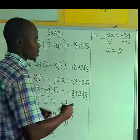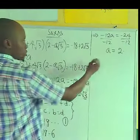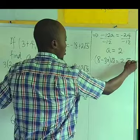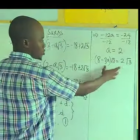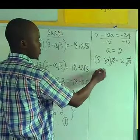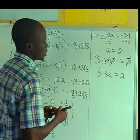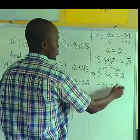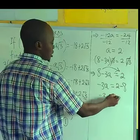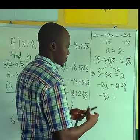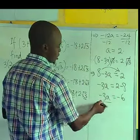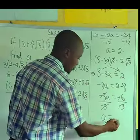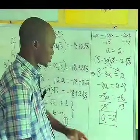Now equating the surd parts: (8 - 3a)√3 = 2√3. Cancelling √3 from both sides gives 8 - 3a = 2. Rearranging: -3a = 2 - 8 = -6. Dividing by -3, we get a = 2, which confirms our answer.